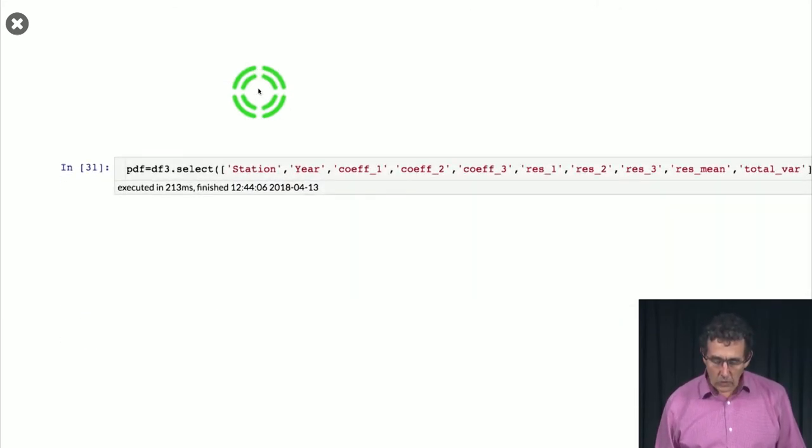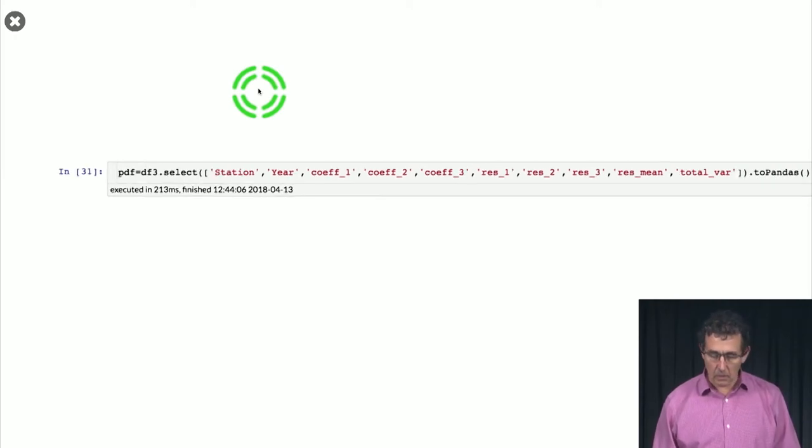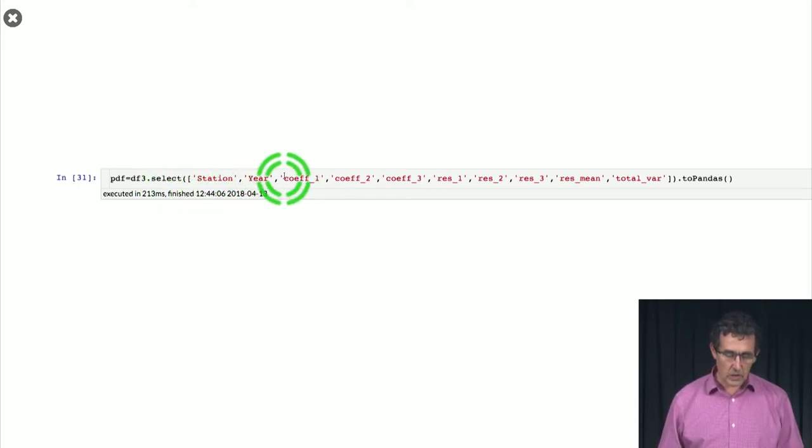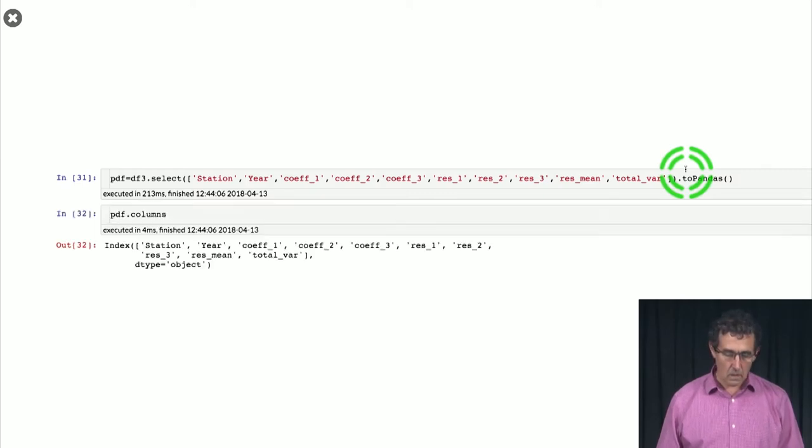What we're doing here is basically selecting these particular columns in the dataframe: station, year, coefficient 1, 2, 3, residual 1, 2, 3, residual after the mean and the total variance. And then we're translating it into a Pandas dataframe. The columns of the Pandas dataframe are these ones that we generated.